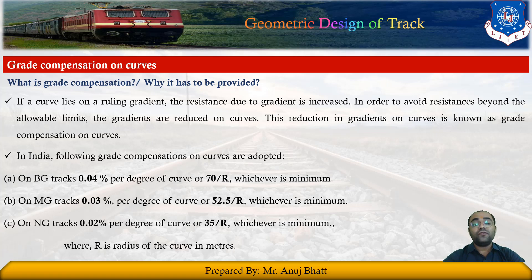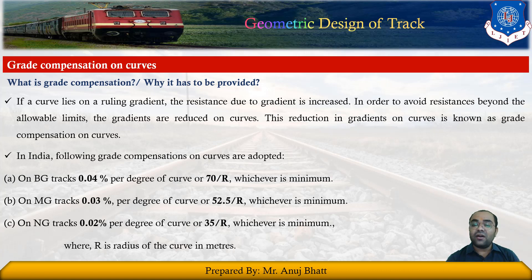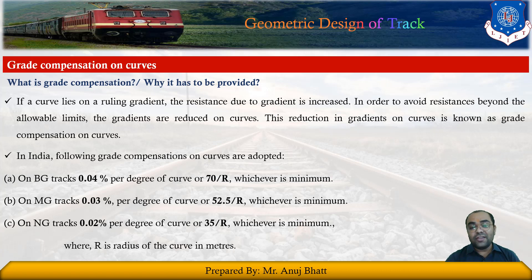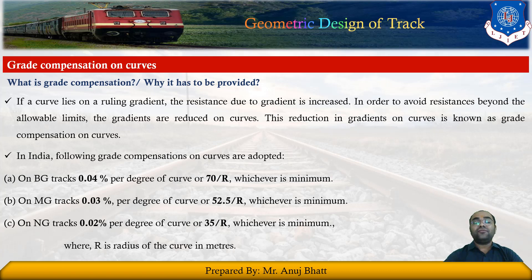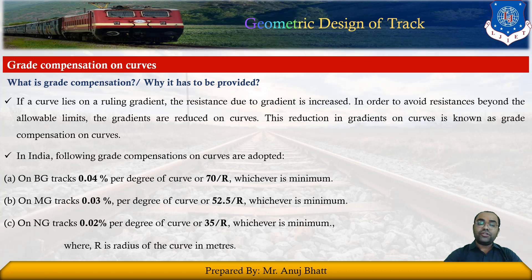In India, for broad gauge track, grade compensation is provided as 0.04% per degree of curve or 70/R (where R is the radius of the curve), whichever is the minimum. For meter gauge, the value is 0.03% per degree of curve or 52.5/R, whichever is minimum. For narrow gauge, the value is 0.02% per degree of curve or 35/R, whichever is minimum. So the key values to remember are 0.04%, 0.03%, and 0.02% for broad gauge, meter gauge, and narrow gauge respectively.